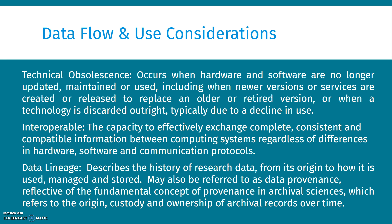Interoperable is another important element — the capacity to effectively exchange complete, consistent, and compatible information between computing systems, regardless of differences in hardware, software, and community protocols. Another concept is data lineage, which describes the history of research data from its origin to how it is used, managed, and stored. It may also be referred to as data provenance, reflective of the fundamental concept of provenance in archival sciences, which refers to the origin, custody, and ownership of archival records over time. There are many tools that sort of track versioning now, but this is a consideration for everyone dealing with a lot of data.